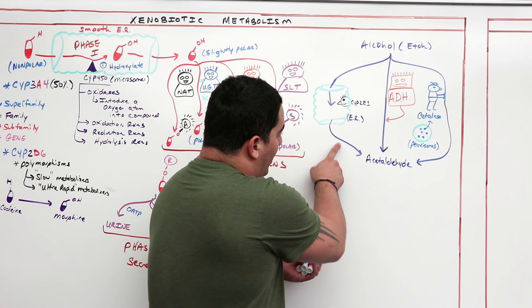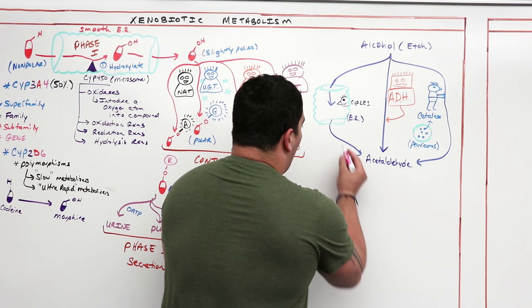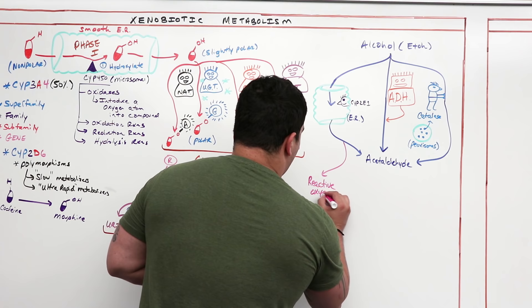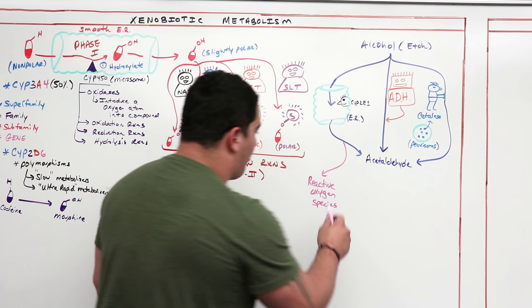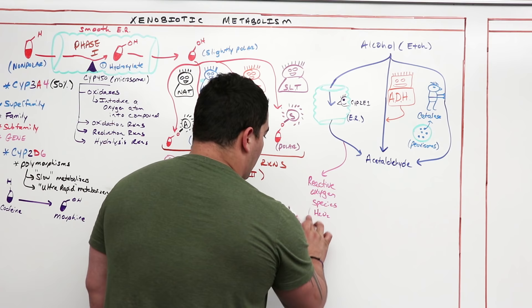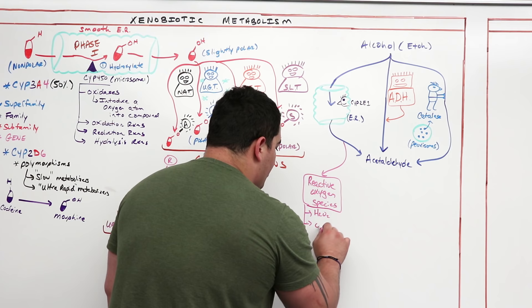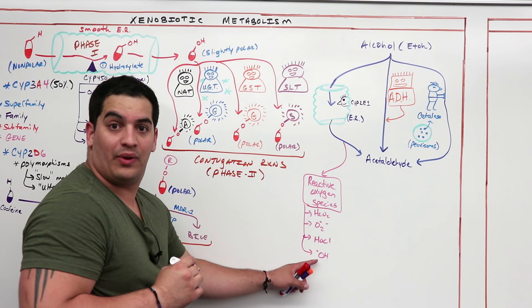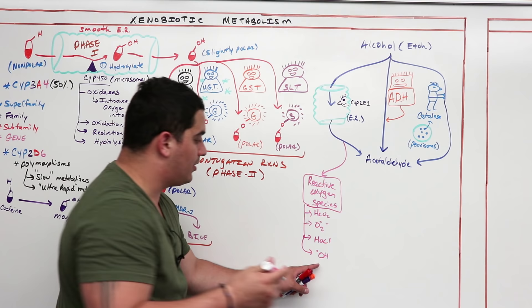Two really bad things happen particularly from the cytochrome 2E1 system. First, it can generate a lot of reactive oxygen species (ROS). Examples include hydrogen peroxide — a very toxic one — the superoxide anion, hypochlorous acid, and the hydroxyl radical. The hydroxyl radical can react with copper and iron in the Fenton reaction. These ROS are extremely dangerous.